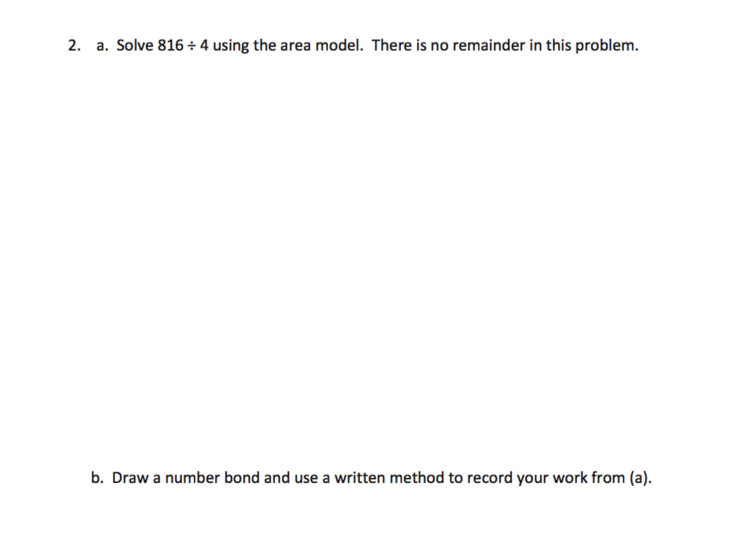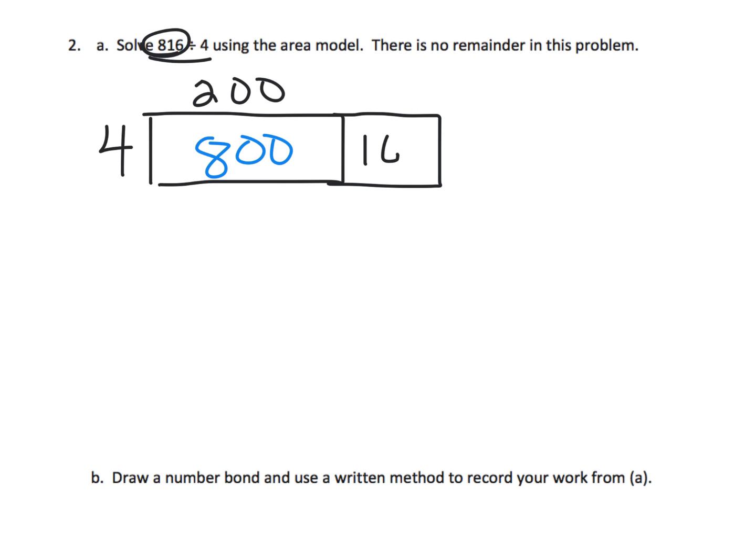So we're going to represent 816 divided by 4 using the area model. So we know that the height of that rectangle is 4. And since we're going to start with that 800, that means we know that 200 times 4 gives us 800. And that means we have 16 left over. In fact, I want to do that in blue. So I'm going to change that. And we have 16 left over. So that means the width is 4. And so our answer is 204.